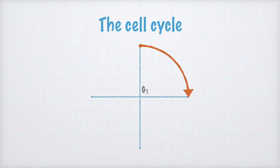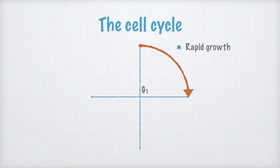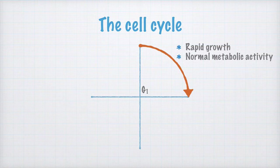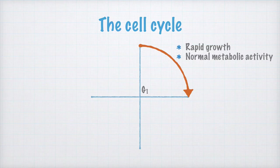Now, the first part of the cell cycle is called G1 for GAP1. This stage in the cell's life is characterized by rapid growth, i.e. the cell increases in size. It's also during this stage that the cell has its normal metabolic activity. This means that the cell essentially does what it's supposed to do.